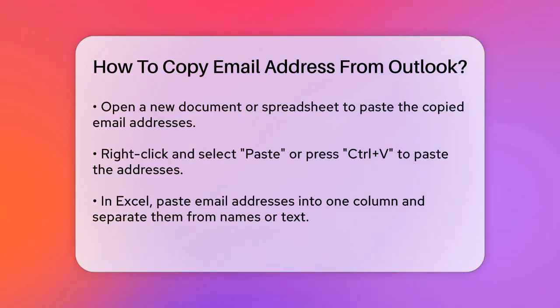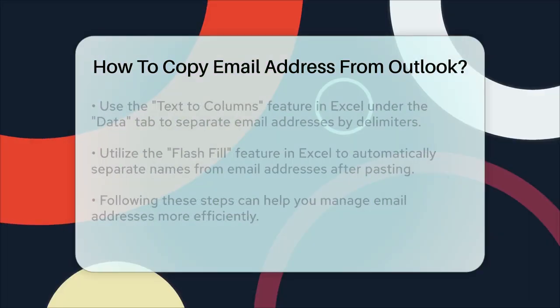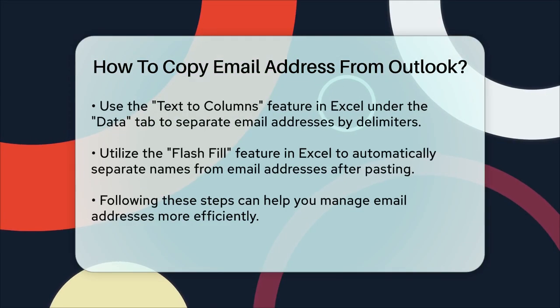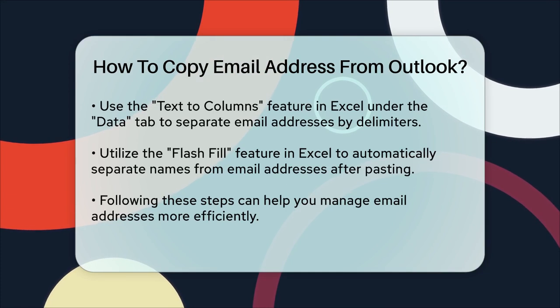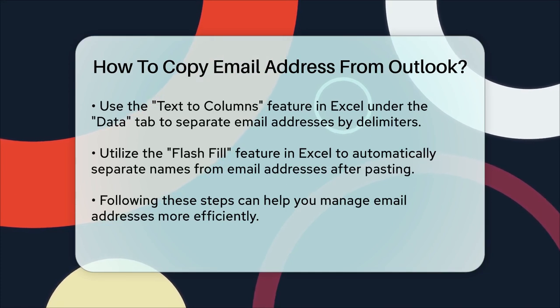Go to the Data tab, select the column with the email addresses, and click on Text to Columns. You can then choose to separate the text by semicolons or other delimiters.